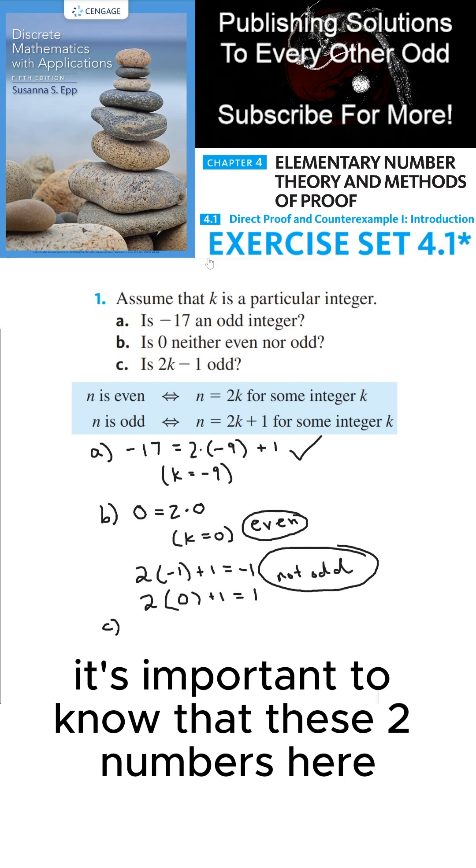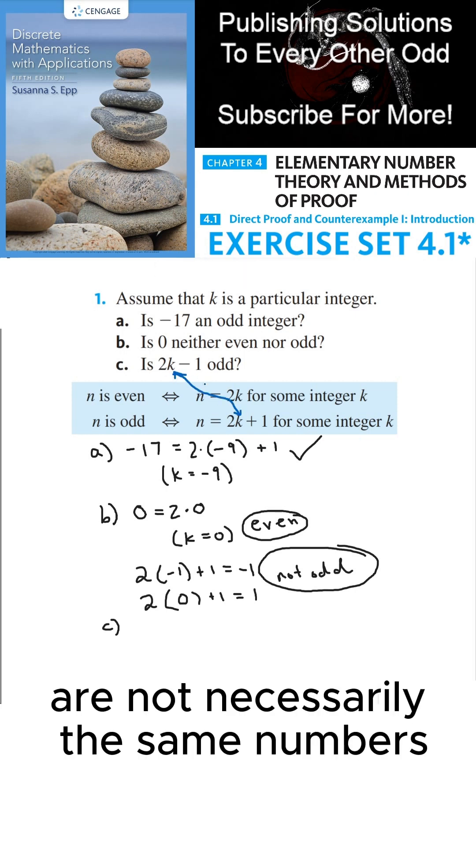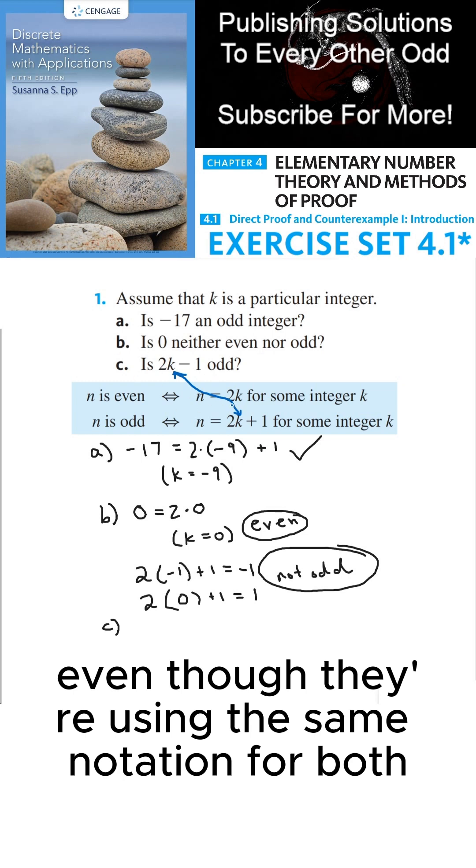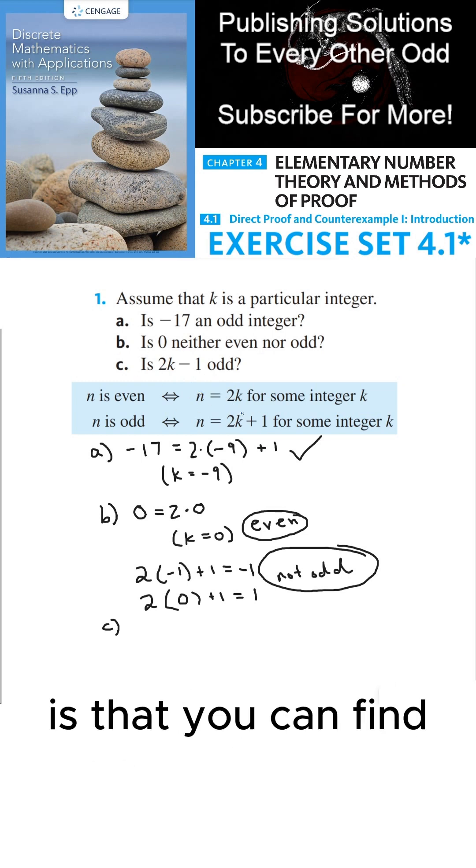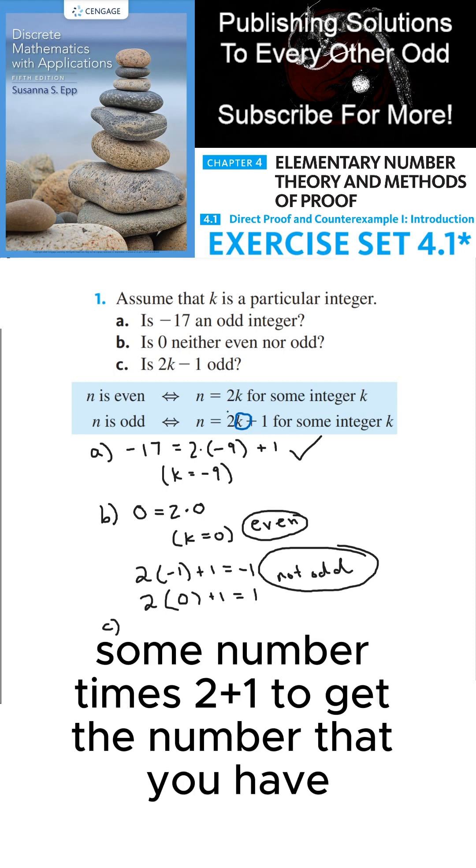It's important to know that these two numbers here are not necessarily the same numbers, even though they're using the same notation for both. What's important with the definition is that you can find some number times 2 plus 1 to get the number that you have.